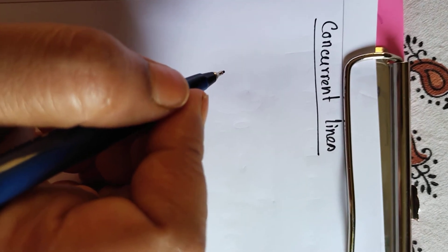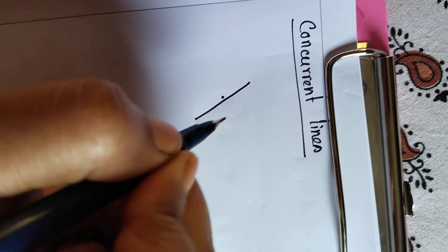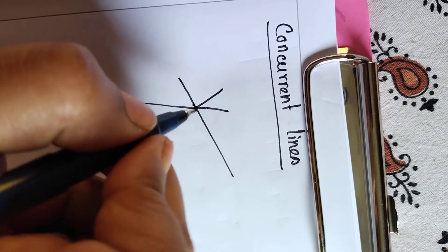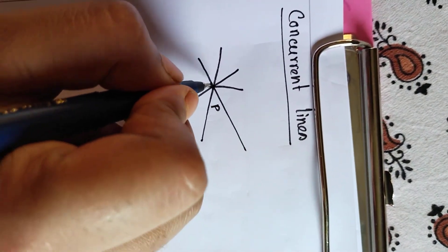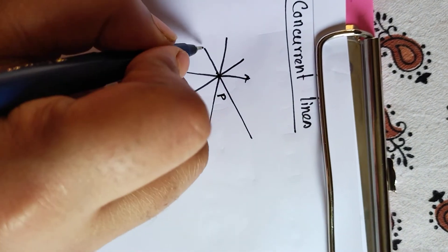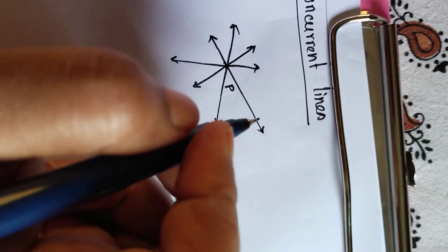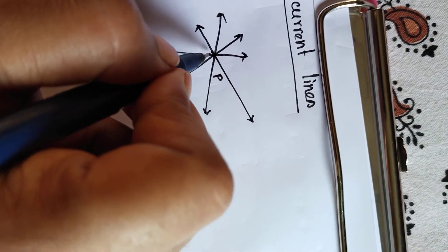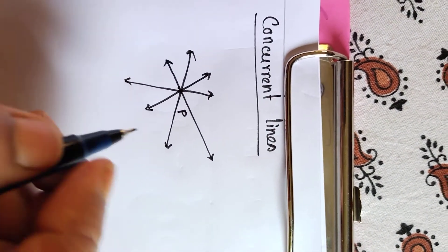I must mention this again: if three or more lines — suppose this is a point P — that point P will be called the point of concurrence and these lines will be called concurrent lines. I have drawn here three lines. When all these lines pass through a same point P, then only these lines will be called concurrent lines.